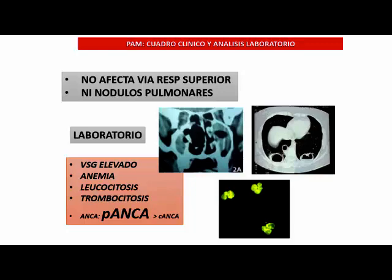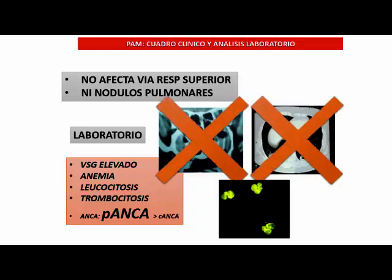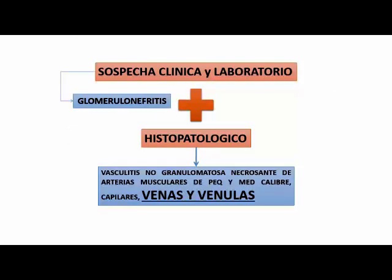Generalmente no va a diferenciar acá para poder hacer un diagnóstico diferencial. No hay nódulos, no hay afectación de vía respiratoria superior. La sospecha clínica empieza generalmente por la glomerulonefritis. La hemoptisis ocurre en un grupo pequeño, no llega ni al 15%. La mayoría de los pacientes llegan por la afectación renal y la biopsia es lo que nos va a dar generalmente la sospecha y el diagnóstico.